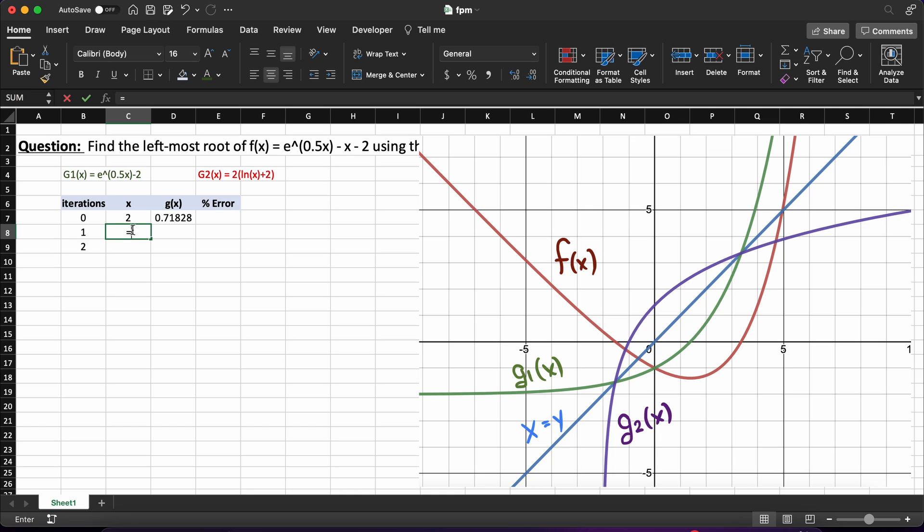Now let's just go ahead and highlight this row and drag it down to iterate our solution. We just need to set our input x value as our output from the first iteration. We can do that by setting this cell equal to the previous output value like cell.